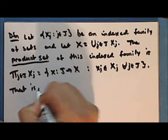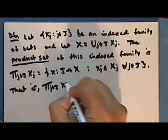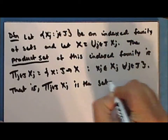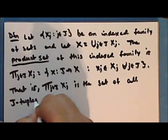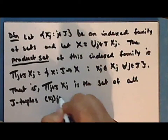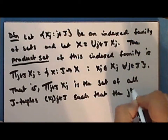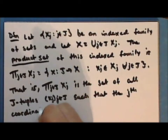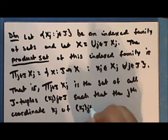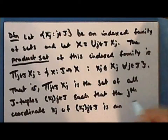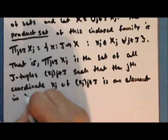That is, the product set is the set of all j-tuples such that the jth coordinate of the j-tuple is an element in the set x sub j.